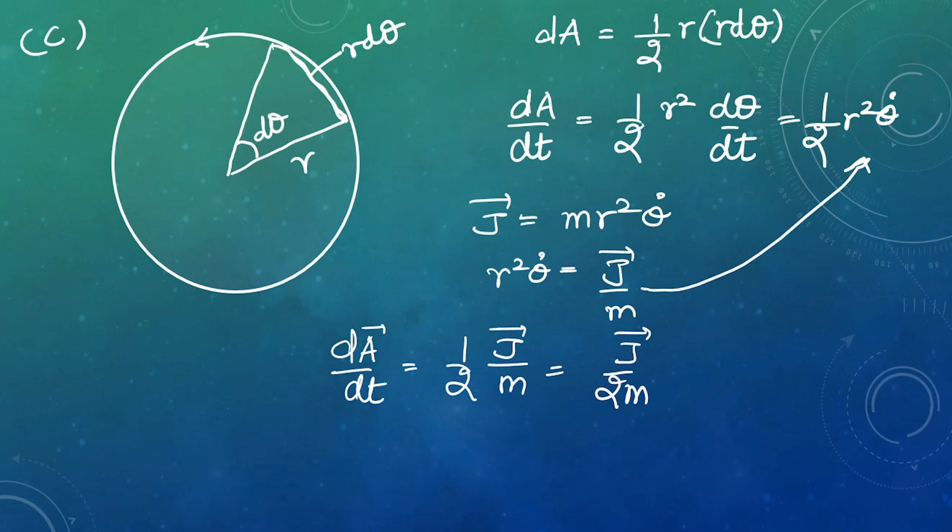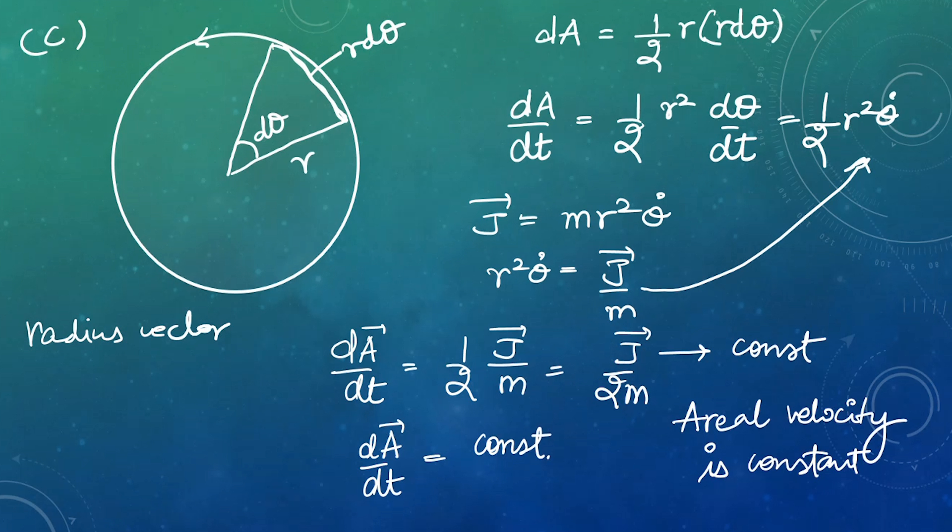We know if a particle is moving under a central force, then its angular momentum is constant. So that means this areal velocity, dA by dt, is constant. So that's our third feature: areal velocity is constant. That means the radius vector is sweeping equal areas in equal time.